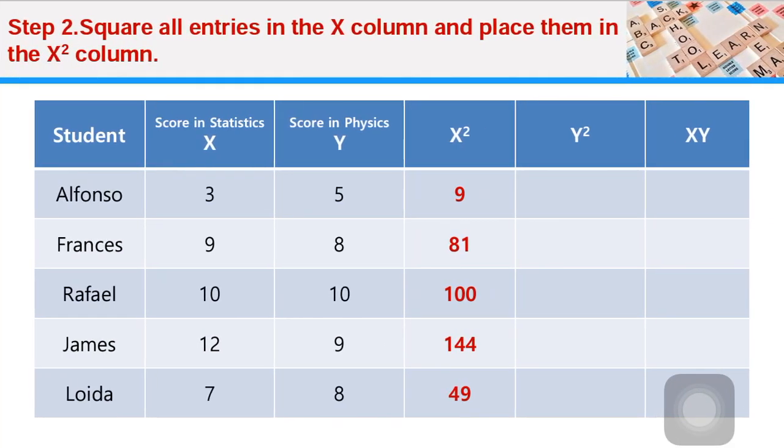Step number two: You square all the entries in the X column and place them in the X squared column. For example, three squared is nine, nine squared is 81, 10 squared is 100.